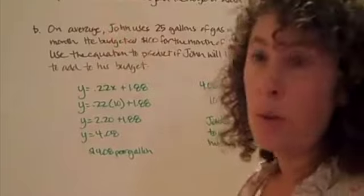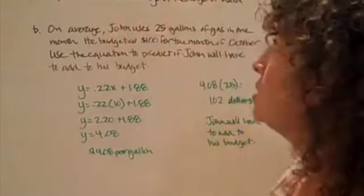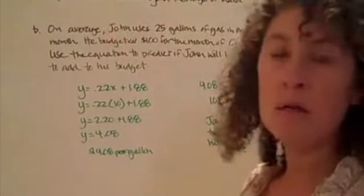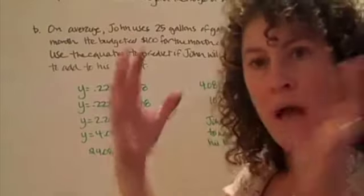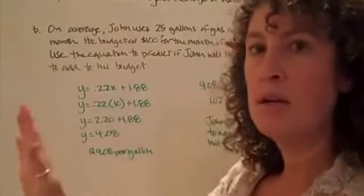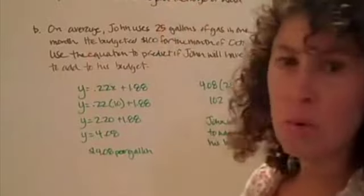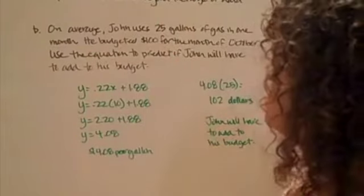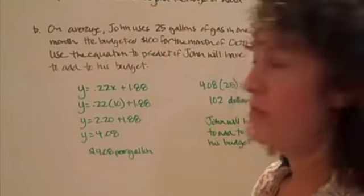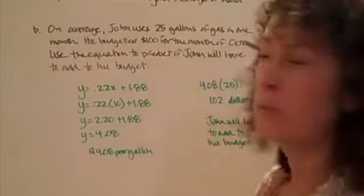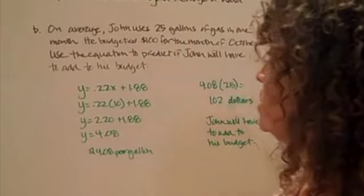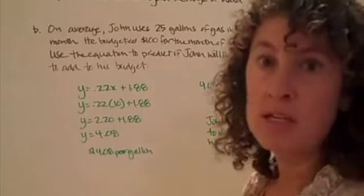This linear extrapolation uses a linear equation to predict values beyond the range of data. We have a set of data. We're going to look at numbers that are outside of that range. Here's our question. On average, John uses 25 gallons of gas in one month. He budgeted $100 for the month of October. Use the equation to predict if John will have to add to his budget.